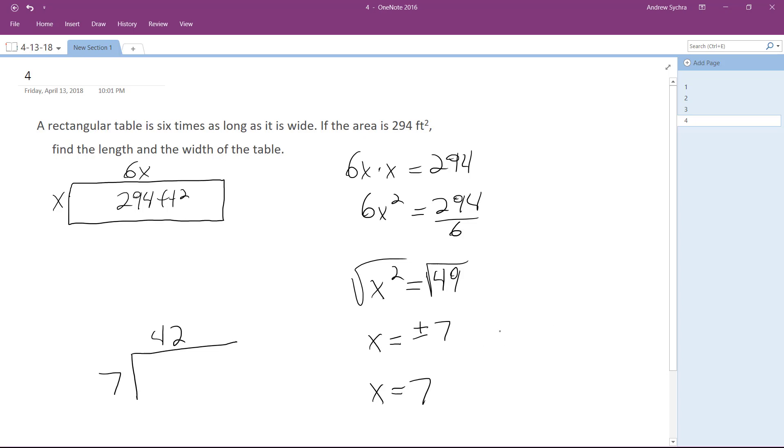So width equals 7 feet, and length equals 42 feet, because 6 times 7 is 42. Alright, I hope this helps you out, and have a great day.